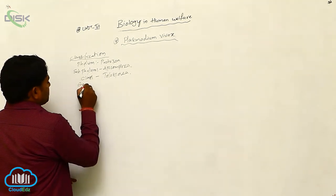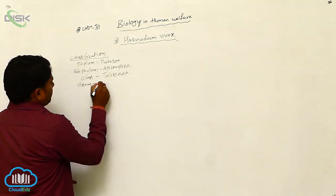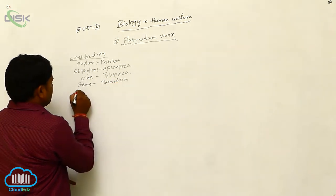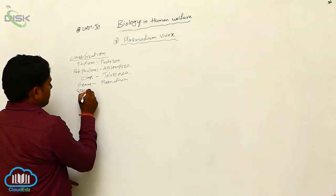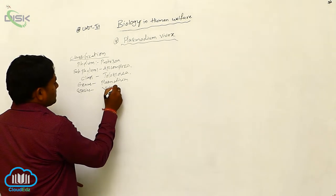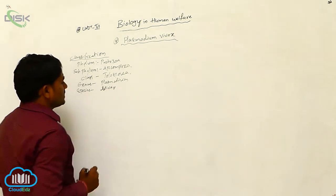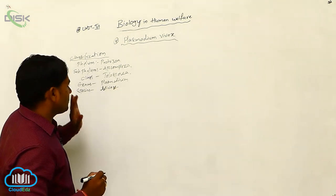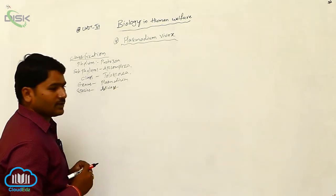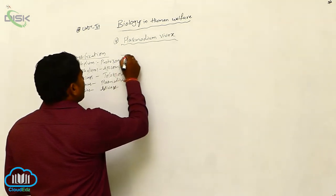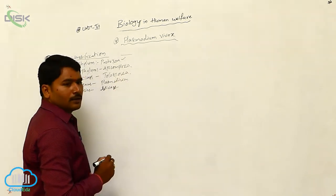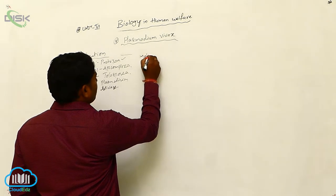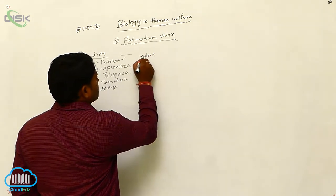Genus is Plasmodium, and the species is vivax. This is the classification of Plasmodium vivax. Plasmodium vivax is a common protozoan parasite which causes malaria disease.